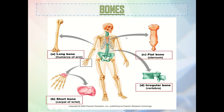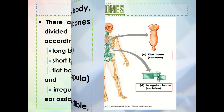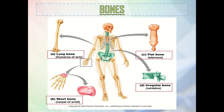Here is a figure of the four types of bones according to shape. The humerus is an example of a long bone — it is lengthy. A carpal of our wrist is a short bone. The sternum is a flat bone. And at the back you have the vertebra, which is an irregular bone. These are the types of bones according to shape.